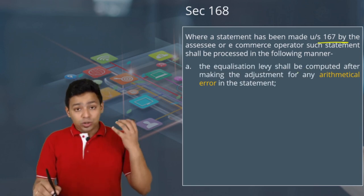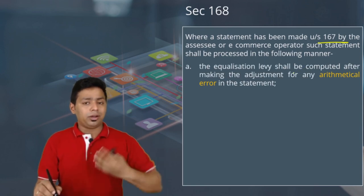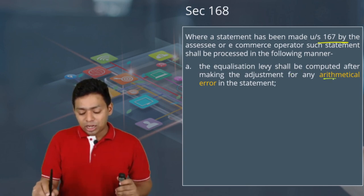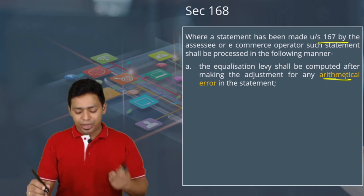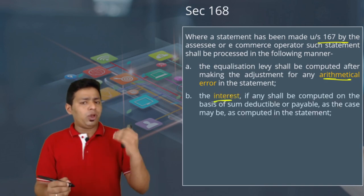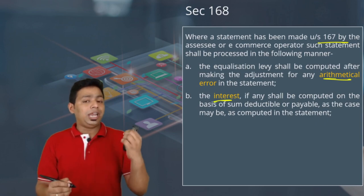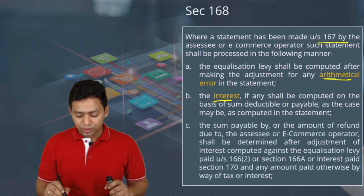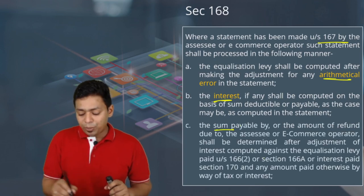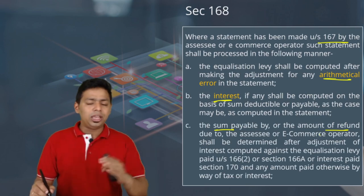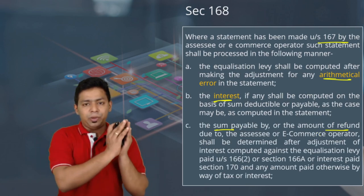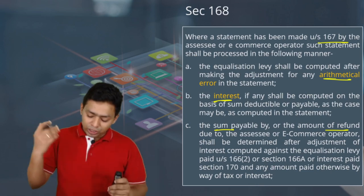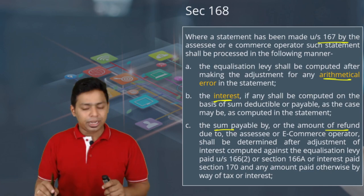This will be automatically processed by CPC Bangalore — the statements are computerized, and any mathematical error will be rectified. If there is any interest payable due to delayed deposit of equalization levy, that interest component will be computed in the intimation. The total sum payable or amount refundable will be determined — either there will be no payment or refund, or there will be an amount payable, or there may be a refund — and the intimation will be sent accordingly.